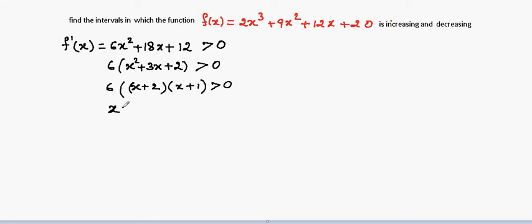So the critical points are x = -2 and another is x = -1. So, minus infinity to plus infinity. First, minus 2 will come. After that, minus 1 will come.